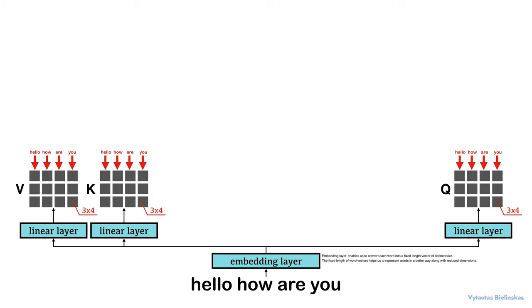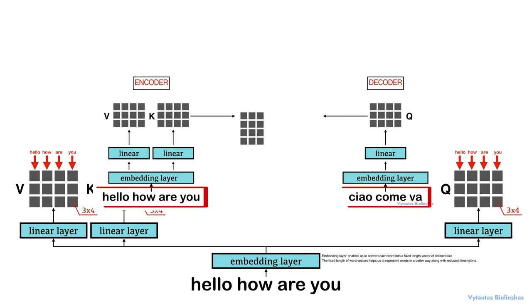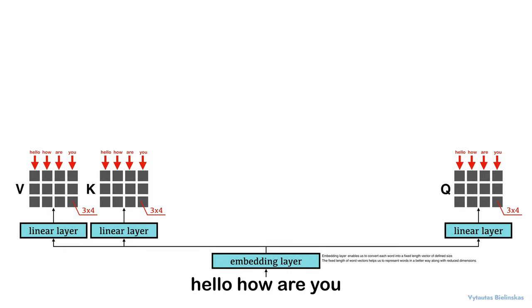Self-attention takes queries, values and keys from a single sequence, different as we had in encoder-decoder attention, where we took these from 2 sequences. This is great when we are building transformer models that look at the previous tokens and try to predict the next token. We would be using this approach in stuff like text generation and summarization.